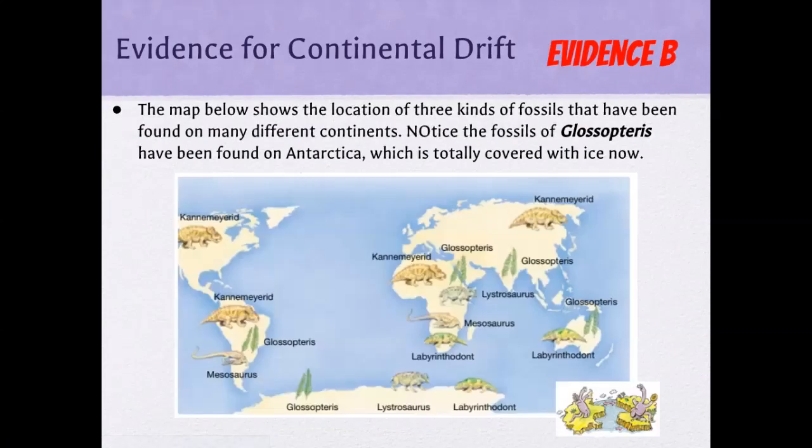Evidence B for Wegener's continental drift theory is the fossil record. They noticed that the same animals can be found in different parts of the Earth. For example, the labyrinthodont is found in both South Africa and Australia — and this organism can't swim that far. So how would it get to these two locations unless those landforms were once together?